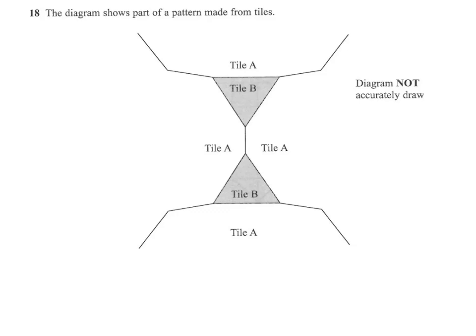So we're told that this diagram shows a pattern made from tiles, and we're showing that both the triangle is regular and so is the other polygon. The problem is to try and find the number of sides the other polygon has.